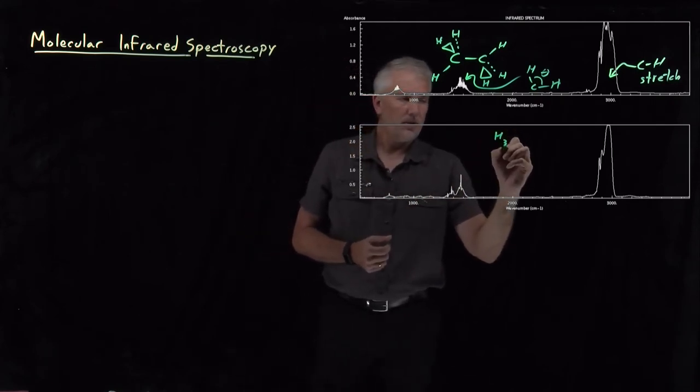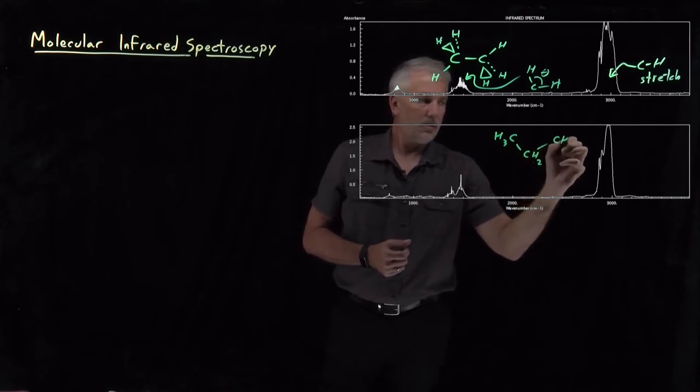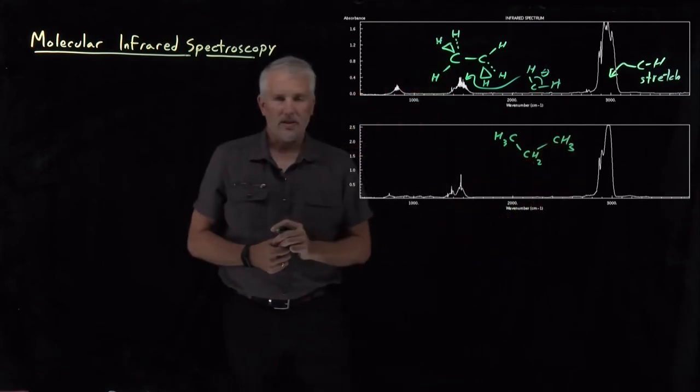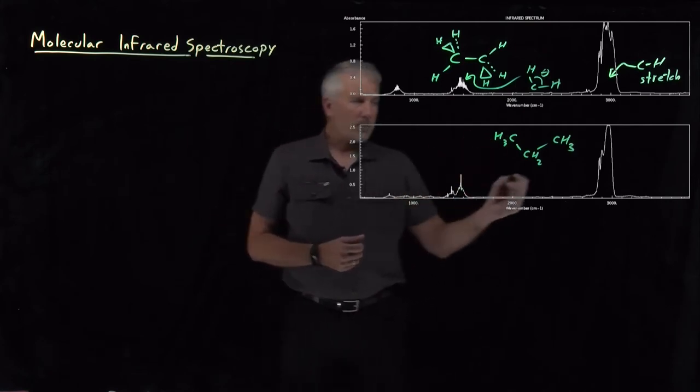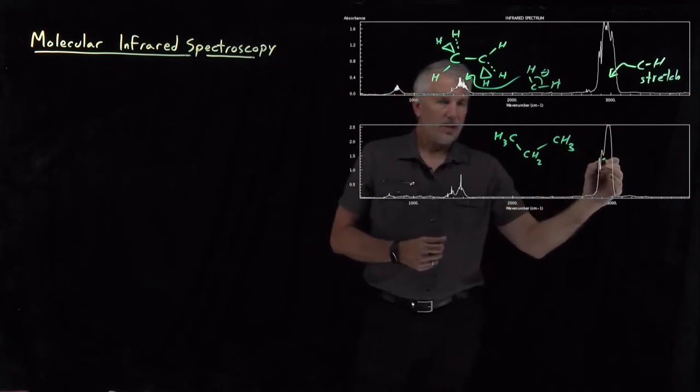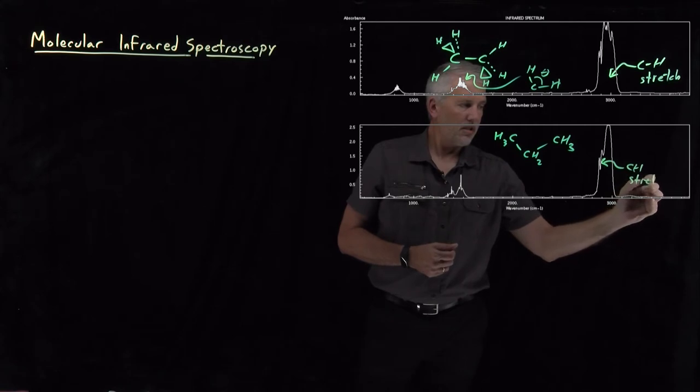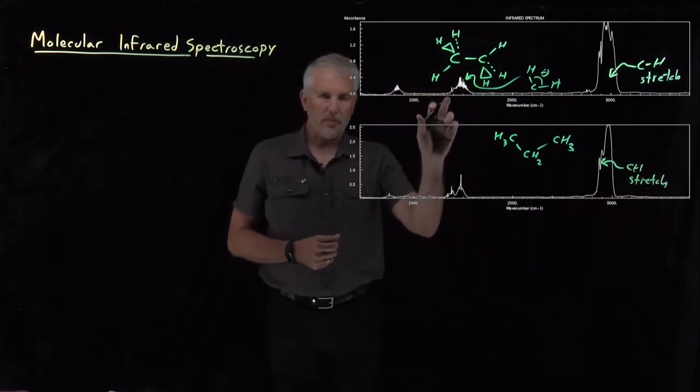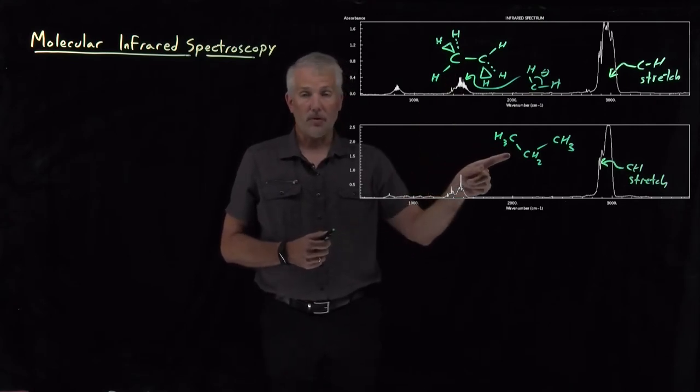This molecule again just has carbons and hydrogens in it, has HCH angles, has CH bonds. So not surprisingly, there's still some CH stretches. There's still various bending modes that show up at the same sorts of vibrational frequencies as for ethane. The only difference is the propane molecule has more of those.